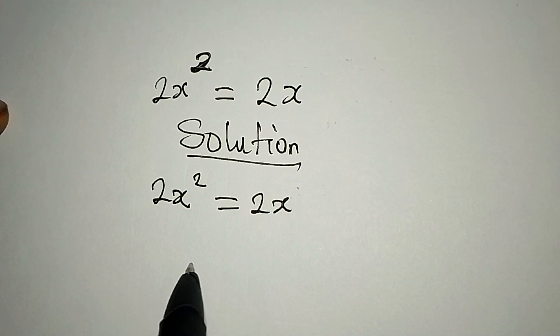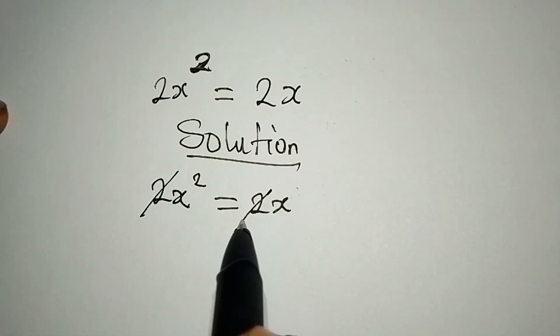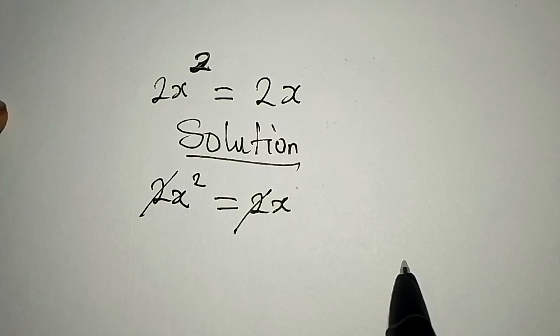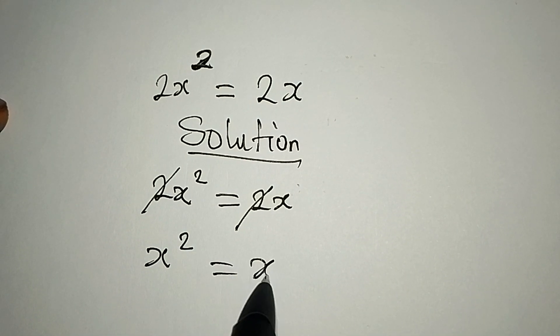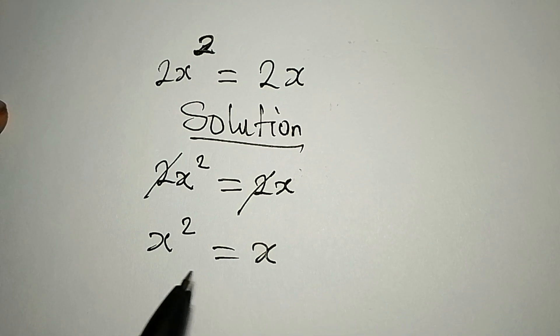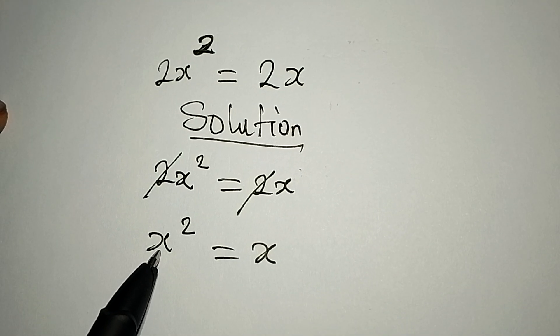This is simple. We can just cancel out the 2 since it belongs to both sides, so x squared is now equal to x.